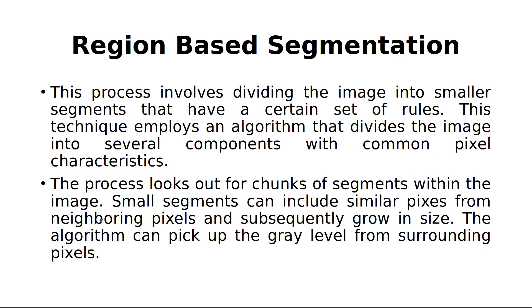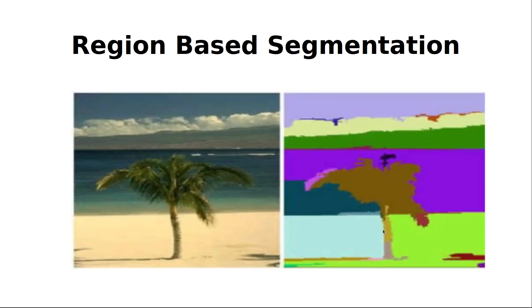Similar pixels from neighboring pixels subsequently grow in size. For example, the cloud is represented in one color. Another shape is represented in green color. The tree is represented in one color and the background is represented in another color. Here, region-wise similar character regions — pixels are grouped and segmented into different segments. This is called region-based segmentation.